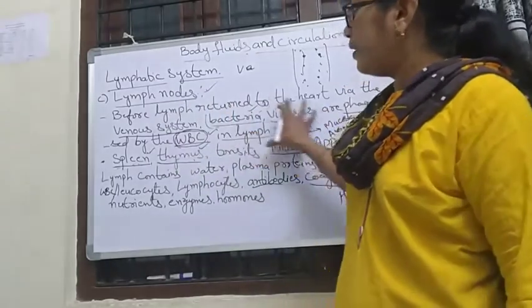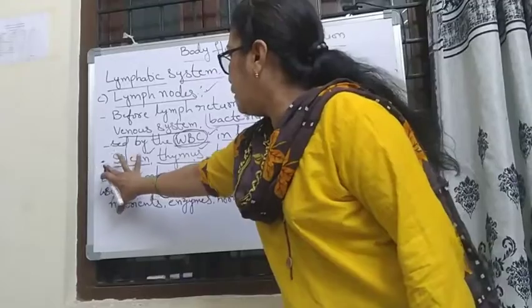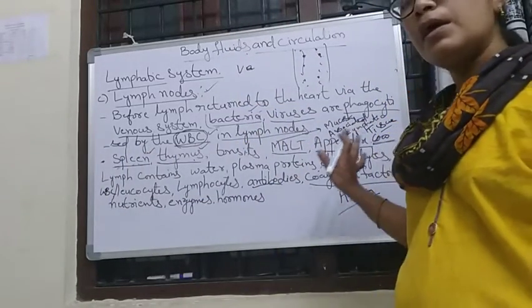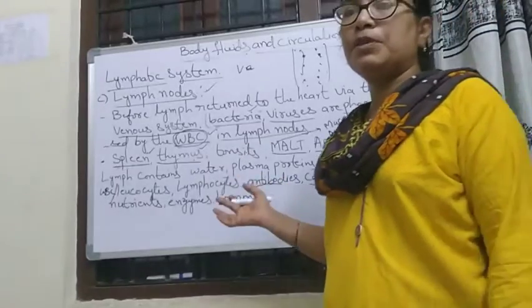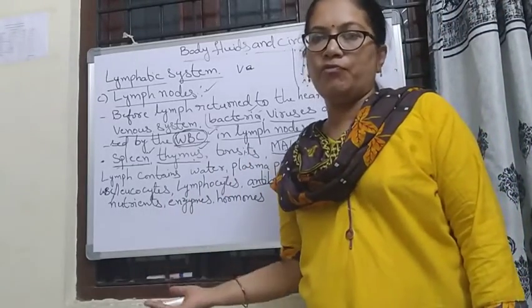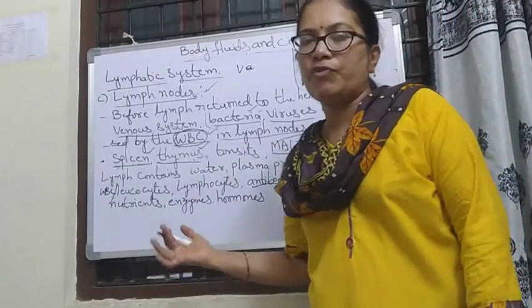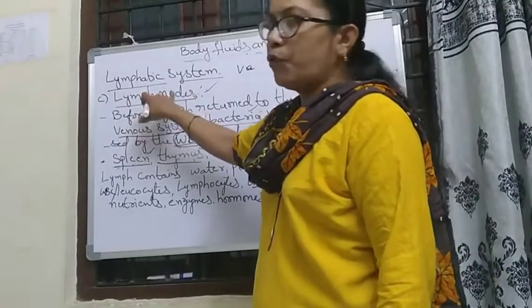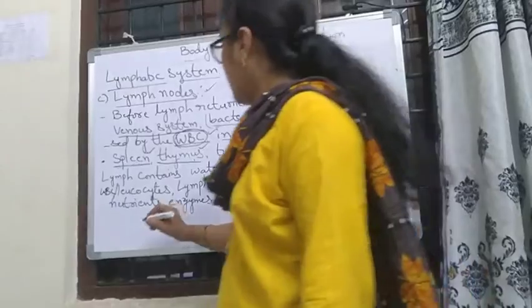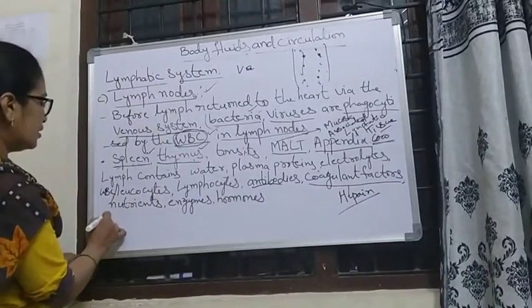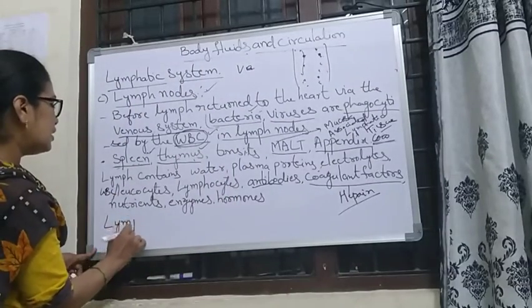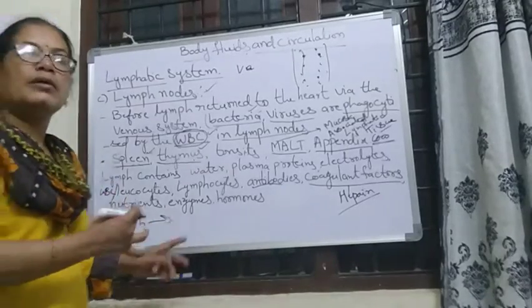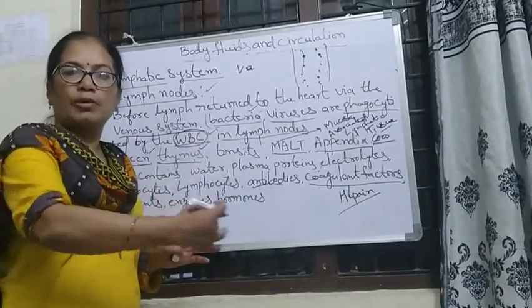These are the lymphatic organs: mainly spleen, thymus, tonsils, MALT, and appendix. These lymphatic organs help in the formation of lymphocytes. From those lymphocytes, they go to the lymph nodes, and through the lymph, they transport the lymphocytes to the bloodstream, and that goes to all organs.